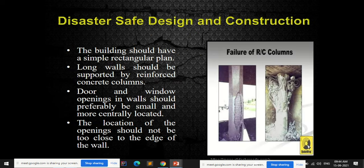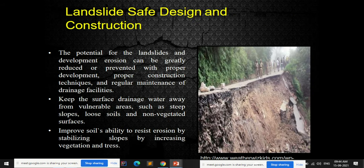Disaster-safe design and construction guidelines include: buildings should have a simple, regular rectangular plan; long walls should be supported by reinforced concrete columns; door and window openings in walls shall preferably be small and more centrally located; and the location of openings should not be too close to the edge of the wall. These simple design considerations help reduce the impact of disaster.